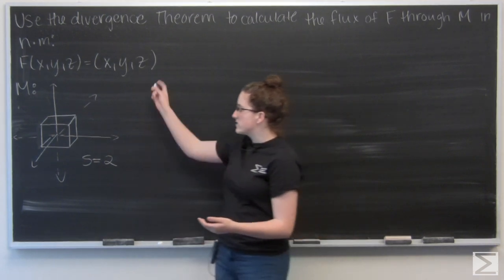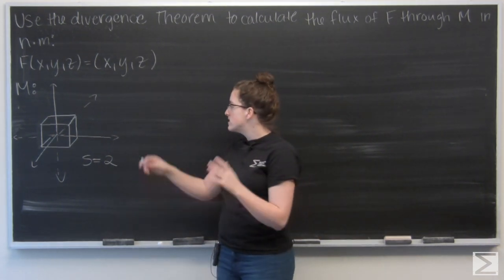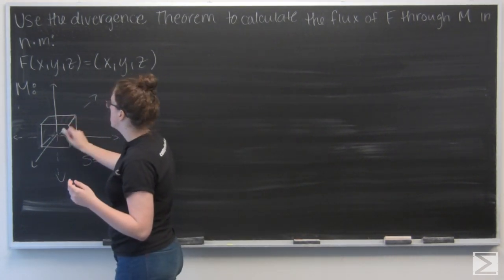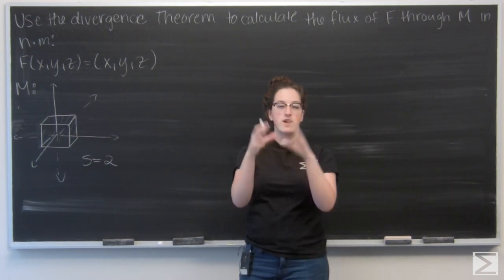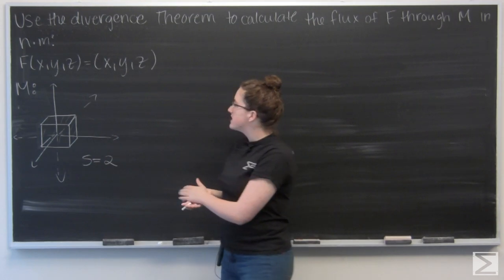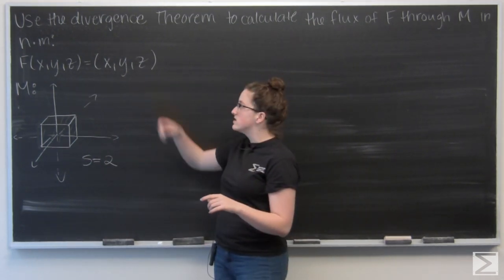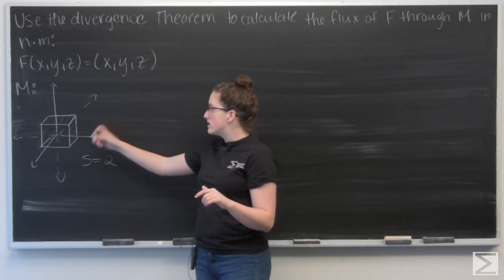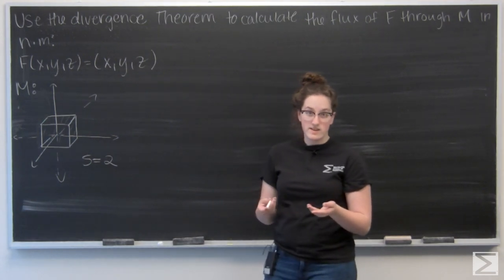I want to calculate the flux of a vector field over some surface, like the outside of this cube. But if I'm looking at a closed surface, like a sphere or a cube, all closed in, instead of calculating a flux integral, I can find the divergence of the vector field and integrate that over the volume of M, wherever I'm trying to calculate the flux through. That can make it a lot easier.